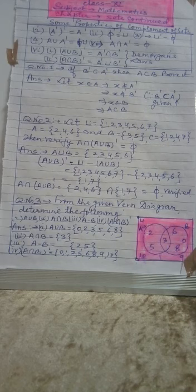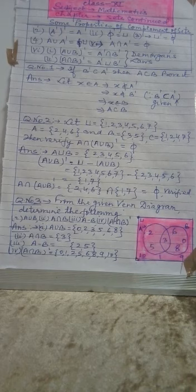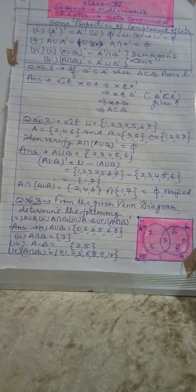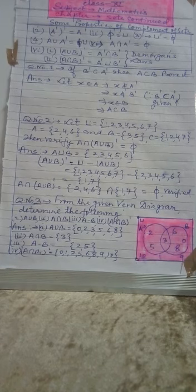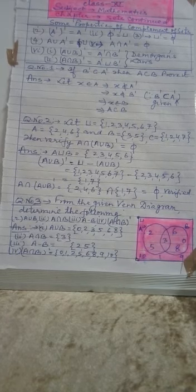And A intersection A union B complement is 2, 4, 6 intersection 1, 7. You see there is nothing common in the set 2, 4, 6 and containing the set whose elements are 1, 7. There is nothing common in these two, therefore it is called null set phi, and that is verified.